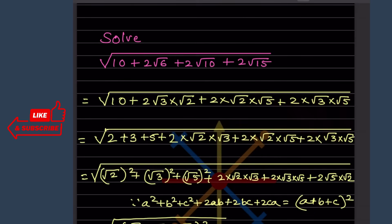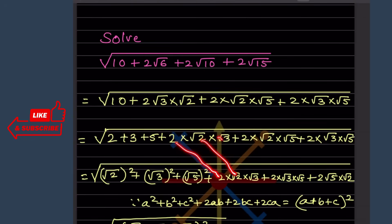Now see here: this 2 we are going to write as (√2)² plus this will be (√3)² and this is going to be (√5)², and this will be as it is here.